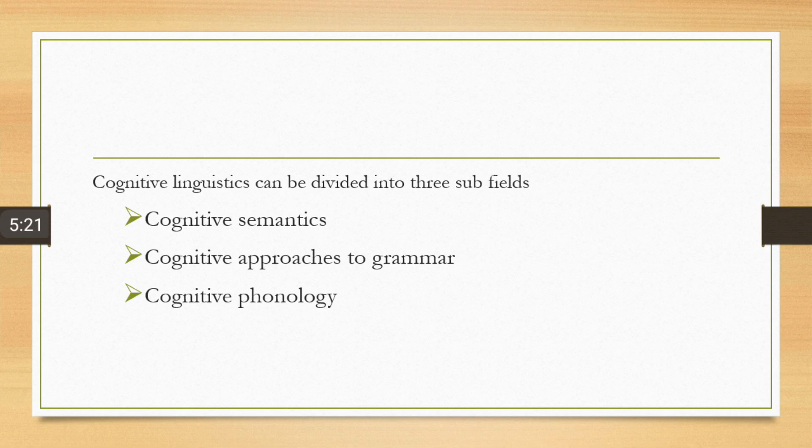The second is cognitive approach to grammar. In cognitivism, these are not the rules, not the structures, or not the written rules that we need to learn before understanding the language. But it is a cognitive ability of mind, a God gifted ability to mind that we process language.